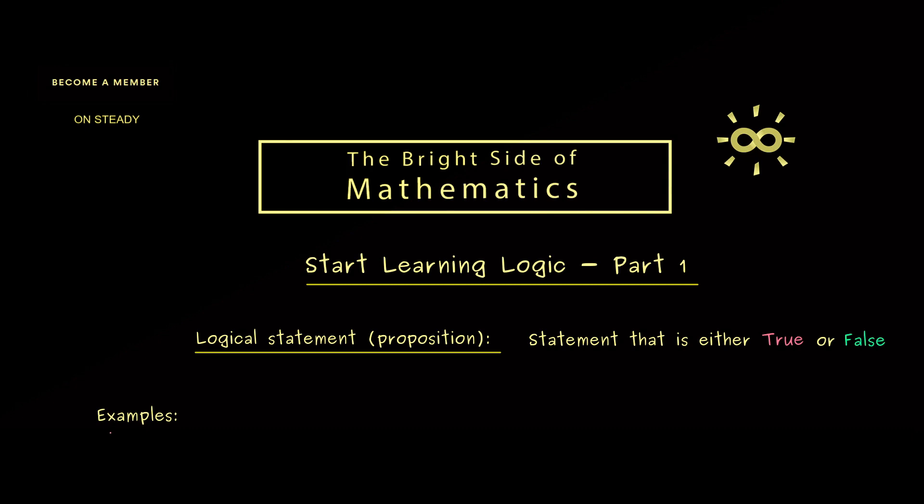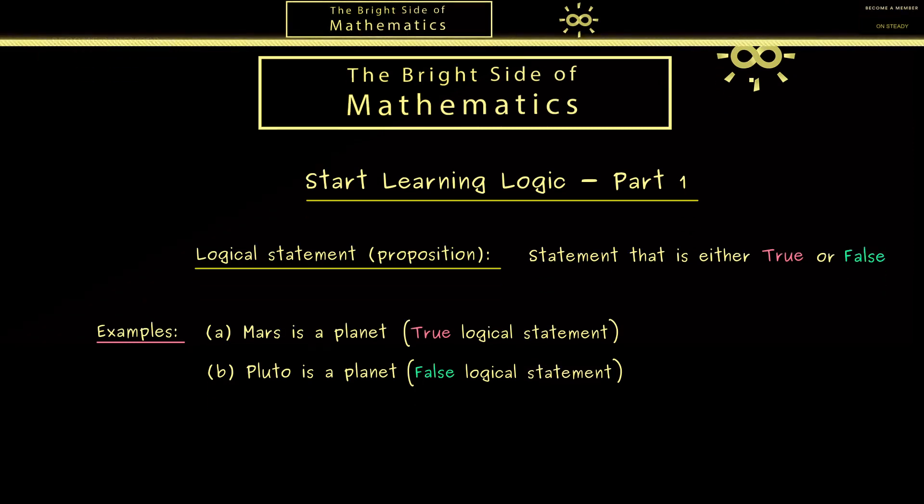Okay then let's look at some examples where you should always keep in mind that we first have to agree on some definitions such that the examples make sense. So here Mars is a planet is a logical statement when we know what object we call Mars and what a planet is by definition. Then this logical statement is indeed true. In this way we can also formulate the sentence Pluto is a planet which is by the same agreement also a logical statement. However this one now has the truth value false. So you see such real world examples can really help to understand the concepts but of course they can lead to some discussions.